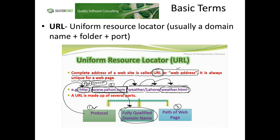A URL — Uniform Resource Locator — is usually some combination of protocol (HTTP for insecure, HTTPS for secure, or even FTP), the domain name like www.yahoo.com, then some sort of folder path like /weather/lahore/weather.html, and then a port. The port is assumed by the protocol — you could put colon 80 and it would work, but browsers are smart and assume HTTP maps to port 80. In fact, most browsers today don't require you to type HTTP at all; they assume HTTPS. But back in 1994 or 1995, you absolutely had to type HTTP:// or it would not work.